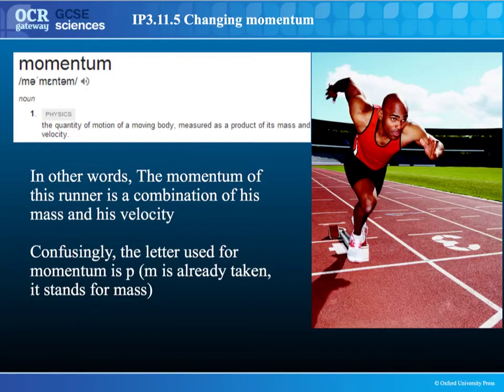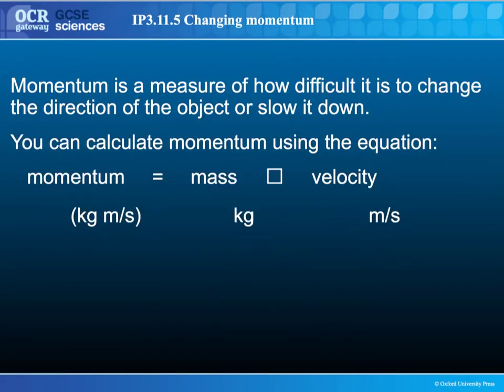First, we're going to talk about momentum and how to calculate it. This is the definition of momentum: it's the quantity of motion of a moving body, measured as a product of its mass and velocity. So the momentum of a runner is a combination of its mass and its velocity. Confusingly, we use the letter P for momentum, because M has already been taken as it stands for mass. In simpler terms, momentum is a measure of how difficult it is to change the direction of an object or slow it down.